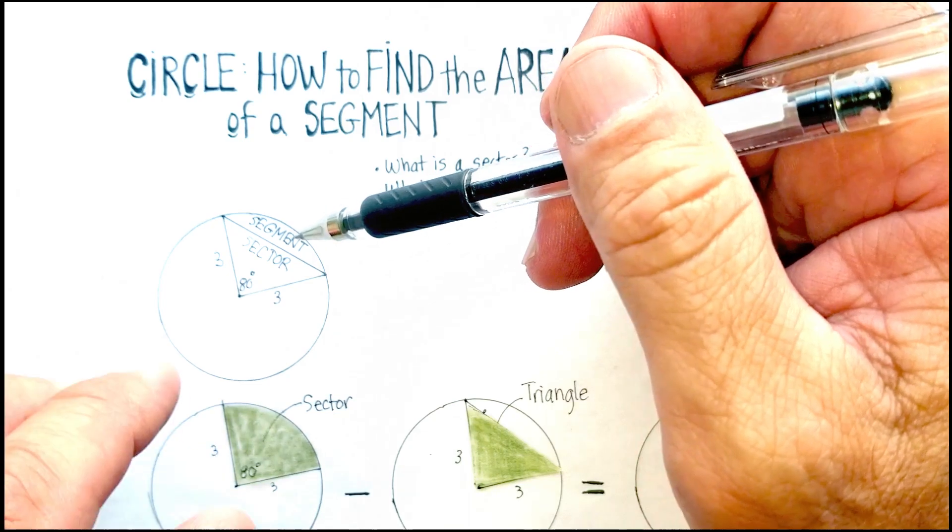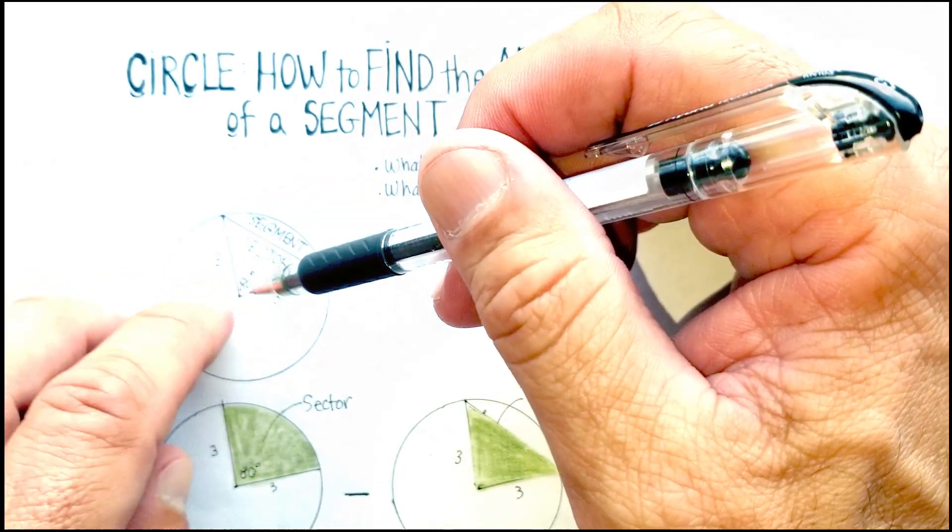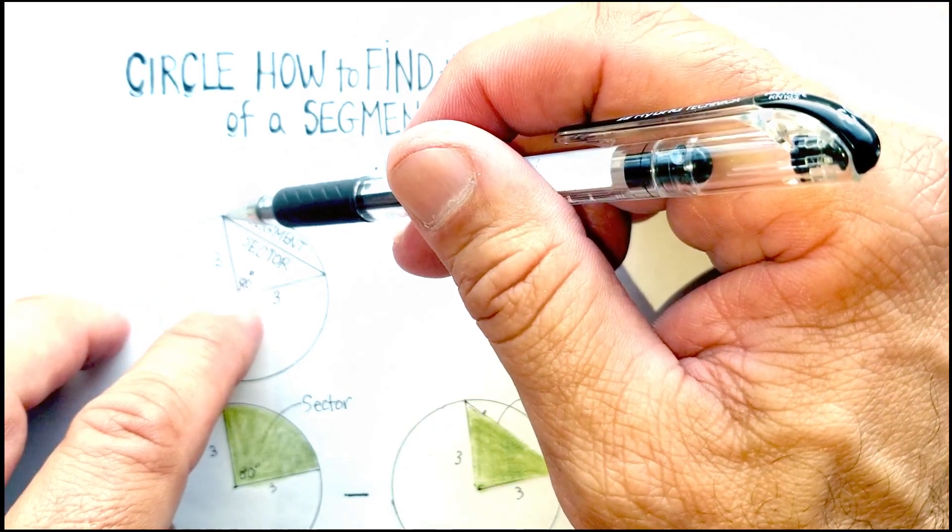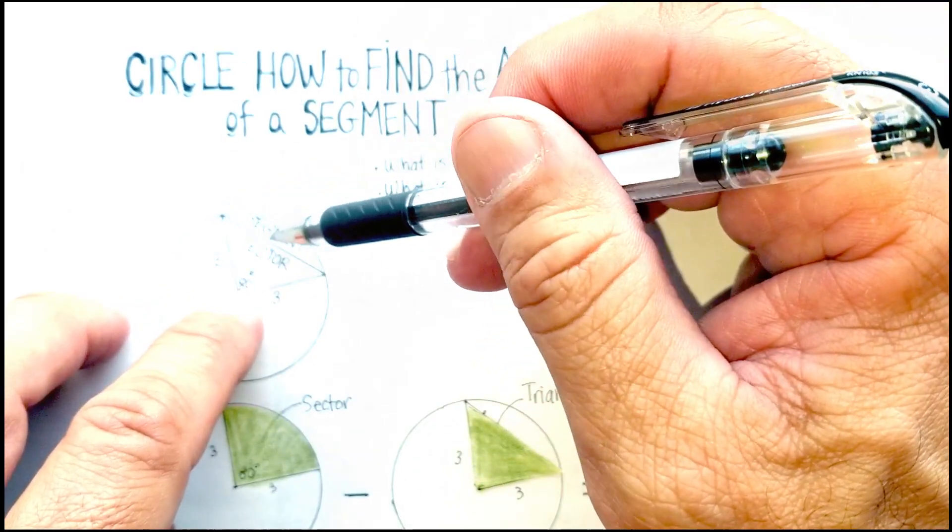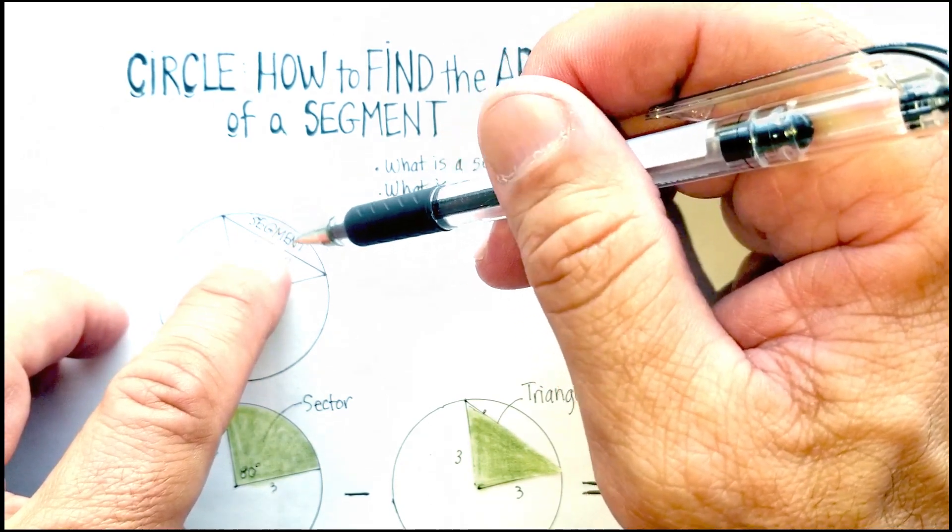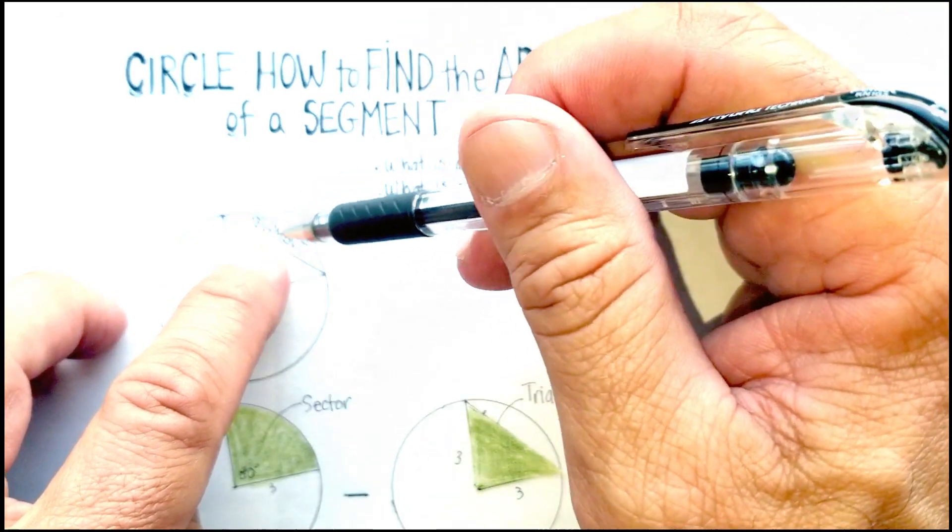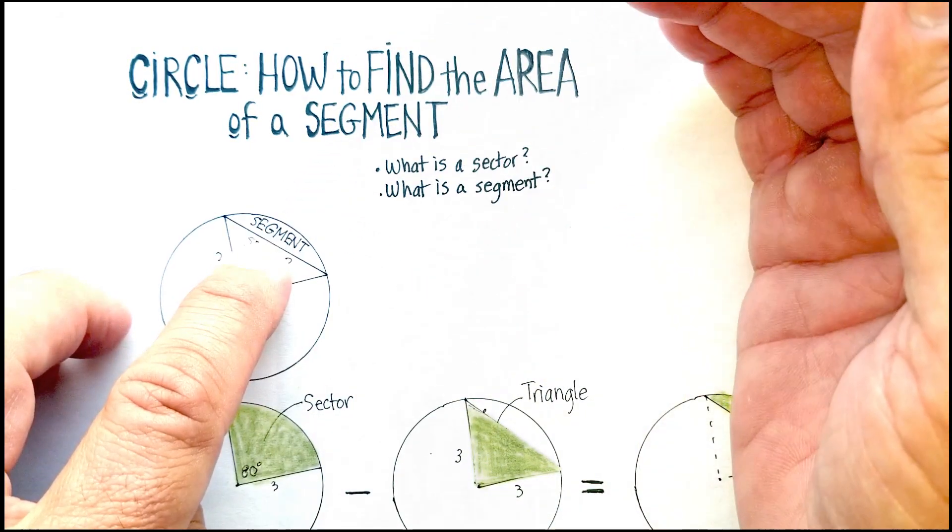Now, the segment is this little portion up here. Wherever the sector intersects with the circumference, just connect those two and create a triangle. And this little portion left over is the segment. So the question is, how do we find the area of that little portion up here called the segment?